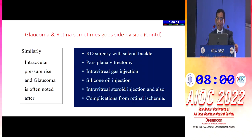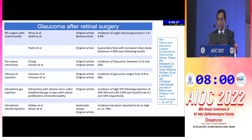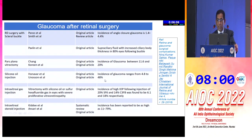Similarly, our colleagues send many patients with higher intraocular pressure and glaucoma — like RD surgery with scleral buckle, pars plana vitrectomy, intravitreal gas injection, silicone oil injection, intravitreal steroid injection, and complications from retinal ischemia. Dr. Niros Kumar et al found that RD surgery causes glaucoma in about 4.4%, pars plana vitrectomy up to 20%, silicone oil injection 4.8 to 48%, intravitreal gas injection up to 20%, and intravitreal steroid injection 11 to 79%.